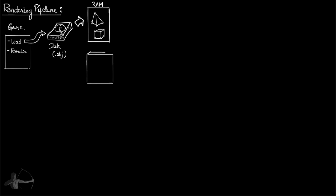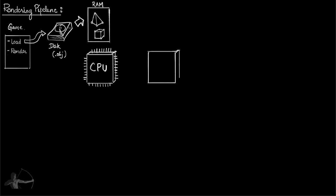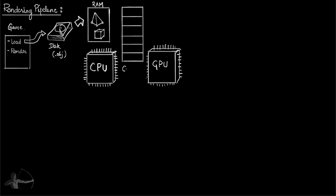Then begins the interaction between the CPU and GPU — your central processing unit and your graphics processing unit. The CPU doesn't directly talk to the GPU; the communication is done using a queue called the command buffer, also called the ring buffer or the ring. There is also a separate RAM for the GPU called VRAM, which stands for video RAM.